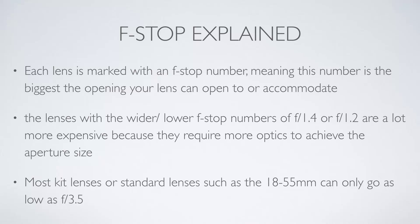Most kit lenses that come stock standard with your camera, such as an 18-55mm lens, can only go down to about f3.5. It might be a great investment to buy a lens capable of going as wide as f1.2. You don't shoot there all the time, but it comes in handy when you want to be creative and produce some creative images.